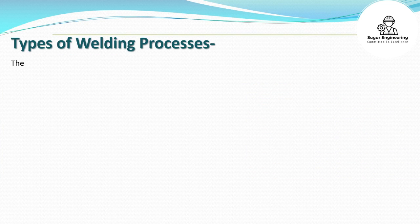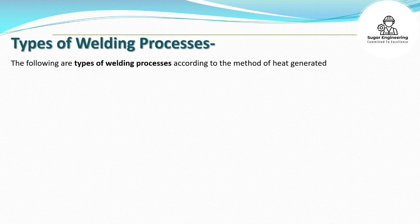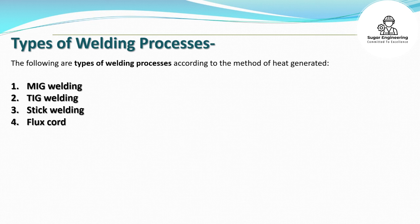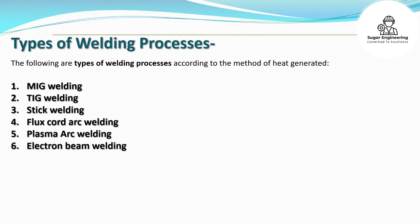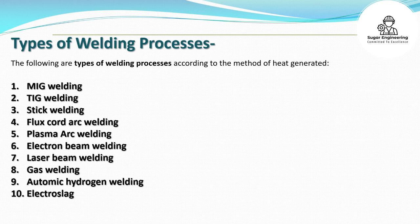Types of Welding Processes. The following are types of welding processes according to the method of heat generated: MIG Welding, TIG Welding, Stick Welding, Flux-Cord Arc Welding, Plasma Arc Welding, Electron Beam Welding, Laser Beam Welding, Gas Welding, Atomic Hydrogen Welding, and Electro-Slack Welding.